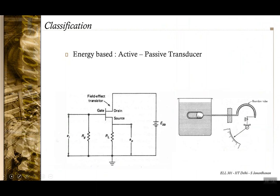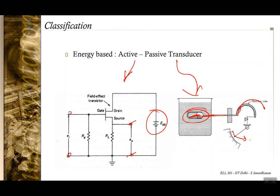Based on how energy is utilized, you can have active instruments where an external source of energy is augmented for the measurement purpose — for example, an active voltmeter measuring input voltage by getting an output voltage. It can also be a passive transducer where there is no external source; the heat generates pressure which causes deflection, so the energy of the measured quantity itself is the only energy source in the instrument.